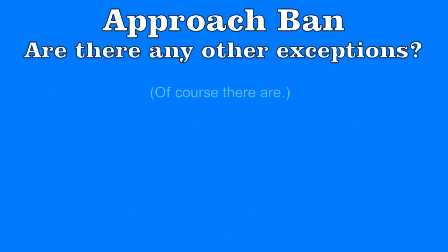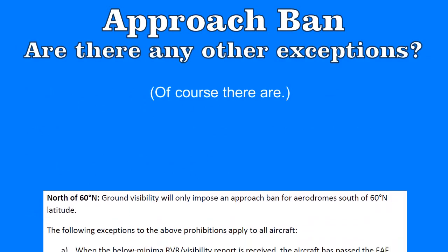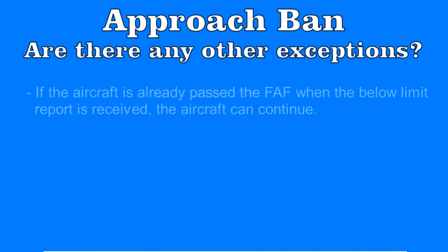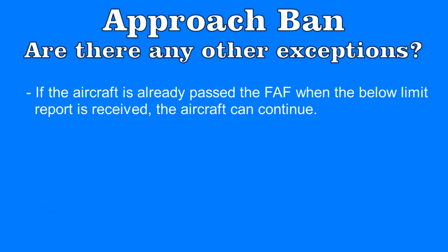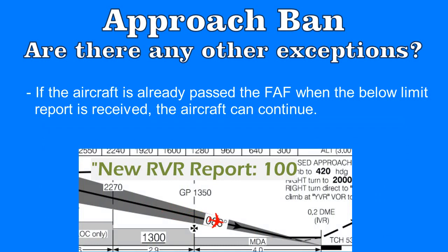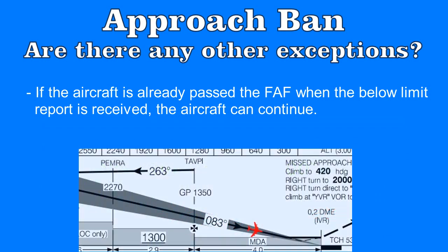I already mentioned one exception to the approach ban, but there are plenty more. What good is a regulation, after all, without exceptions? The first and most common exception is that if the aircraft has already passed the final approach fix, or intercepted final if there is no final approach fix, when the below-approach-ban-limit visibility is received, the aircraft can still continue on the approach.